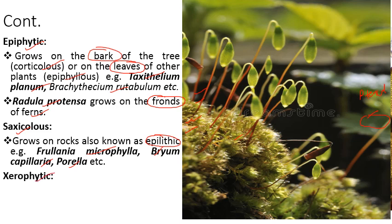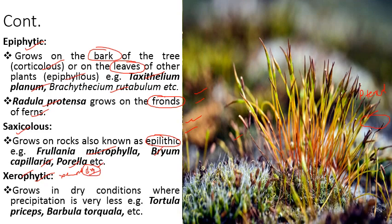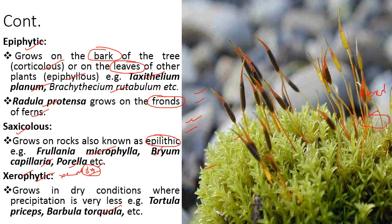Xerophilic bryophytes grow in extremely dry conditions with very little precipitation. Examples include Tortula princeps and Barbula torquata, which grow in extremely dry conditions.